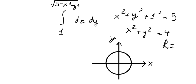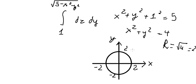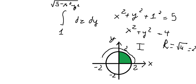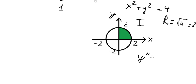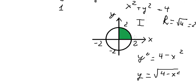The radius of the circle is the square root of four, which is two. Since the question restricts us to the first octant, we concentrate on that region of the circle. Looking at the graph, we move x squared to the right and get y squared equal to four minus x squared. Taking the positive square root, y equals the square root of four minus x squared.